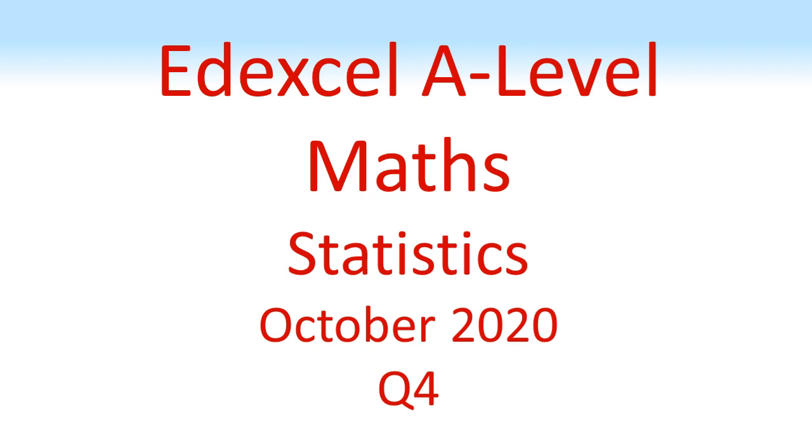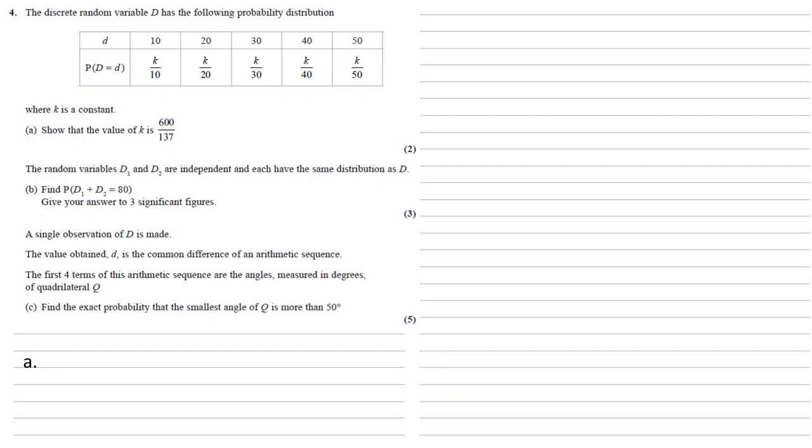NXL A-Level Maths Statistics October 2020 Question 4. The discrete random variable D has the following probability distribution in the table as shown, where K is a constant.